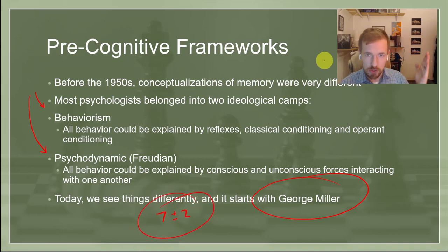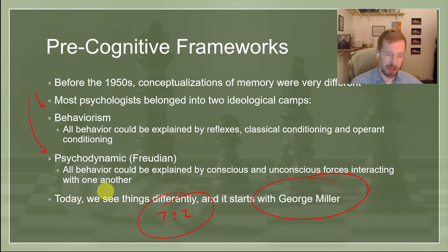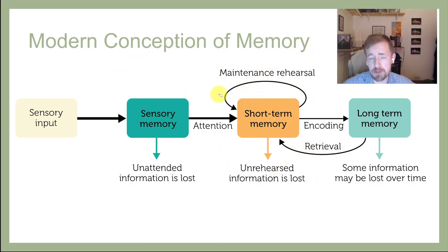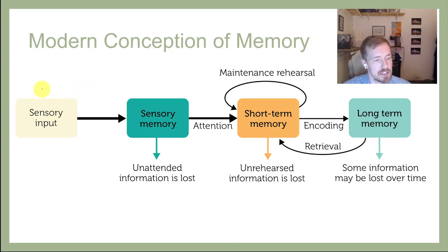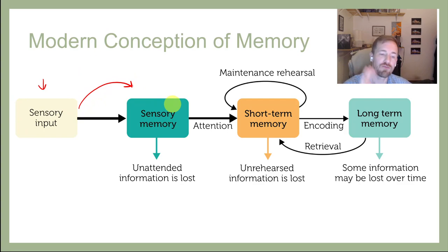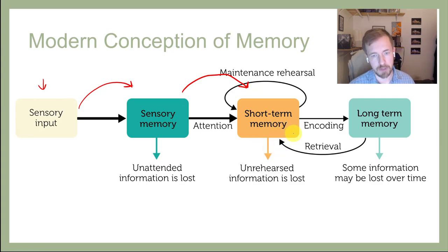This notion that we have an internal limit was really fundamental for getting us to think about behavior and psychology in a new way. Here is a more modern conception of memory. George Miller's seven plus or minus two fits right into the short-term memory piece. Basically, here is how we understand memory to work now: we experience the world through sensory input — visual, auditory, taste, touch, smell — and that information reaches the first parts of our brain responsible for sensory memory. If we pay attention to those senses, they move over to short-term memory.